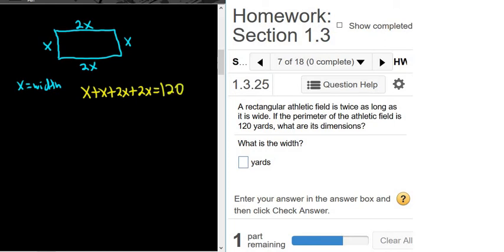If you add everything up, you get 6x equals 120. Divided by 6, we get x equals 20.